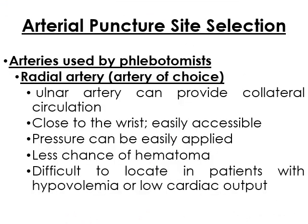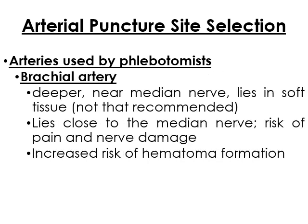The artery used by the phlebotomist is the radial artery. Why? Because the ulnar artery can provide collateral circulation. It is closer and easily accessible, pressure can be easily applied, and there is less chance of hematoma. However, it is difficult to locate in patients with hypovolemia or low cardiac output — meaning the pulse may not be felt. For the brachial artery, it is deeper and near the median nerve, and lies in soft tissue.